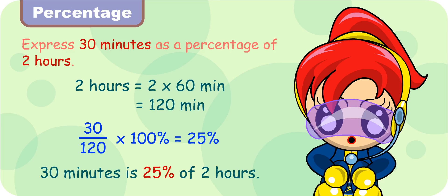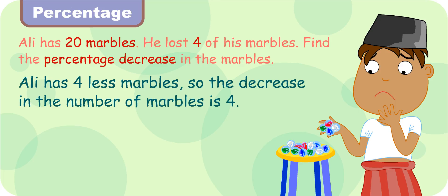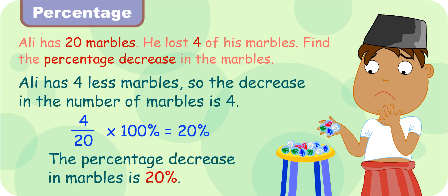Let's move on to something slightly different. Look at the question. Ali has 20 marbles. He lost 4 of his marbles. Find the percentage decrease in the marbles, Turbo Girl. Well, Ali now has 4 less marbles, so the decrease in the number of marbles is 4. Therefore, 4 out of 20 in percentage is 4 over 20 times 100%, which equals 20%. The percentage decrease in marbles is 20%.